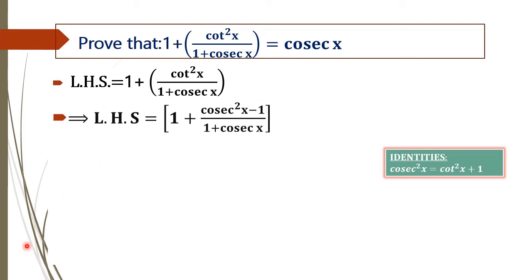Using that identity, we can rewrite this numerator as cosec x minus 1 times cosec x plus 1. That is, a squared minus b squared equals a minus b times a plus b.